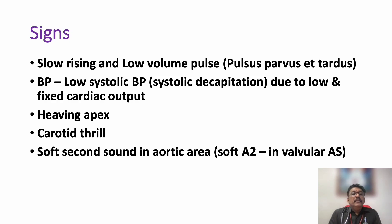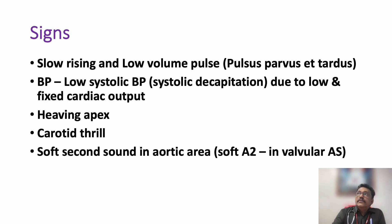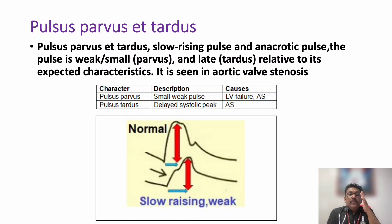On examination, you can see a slow-rising, low-volume pulse. Blood pressure shows low systolic BP — called systolic decapitation — due to fixed and low cardiac output. There is a heaving type of apical impulse due to left ventricular hypertrophy. A carotid thrill may be present, as the palpable murmur can radiate to the carotid area. A soft second heart sound is present because the aortic valve does not close properly. This is the clinical picture of pulses parvus et tardus — low volume, slow-rising pulse.